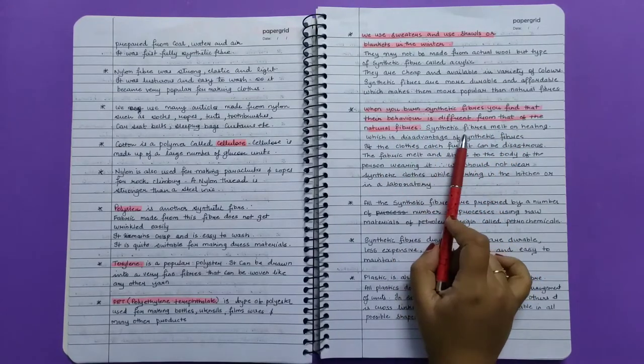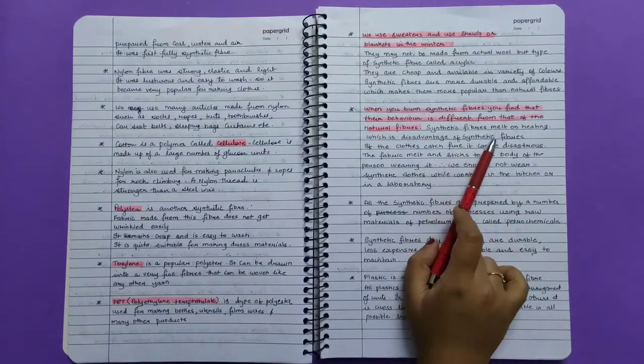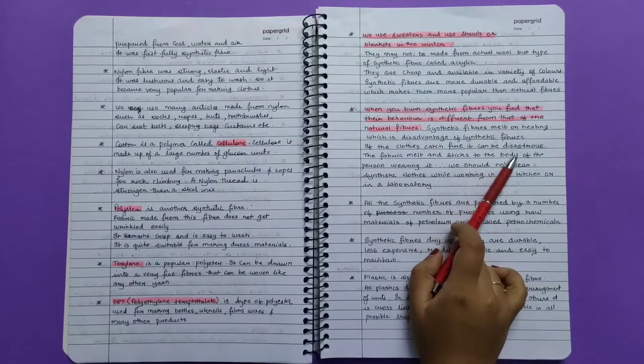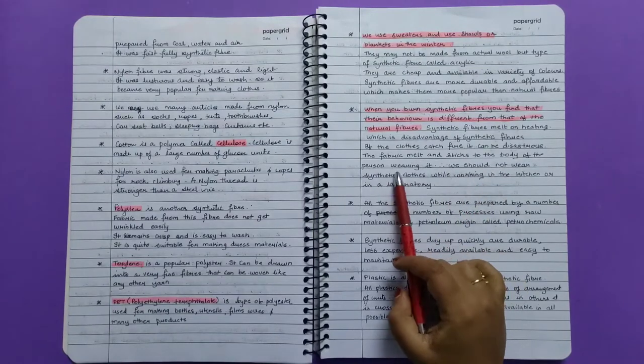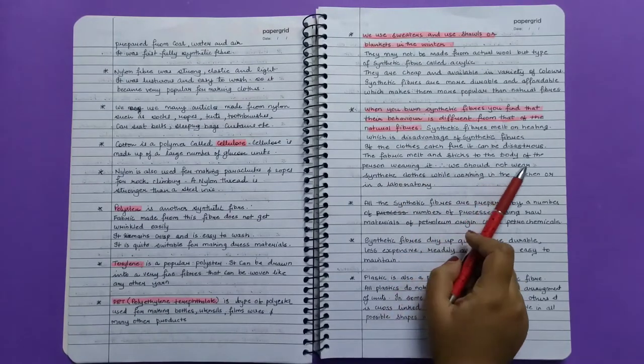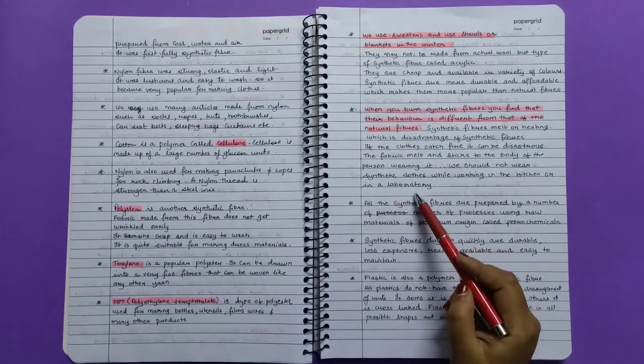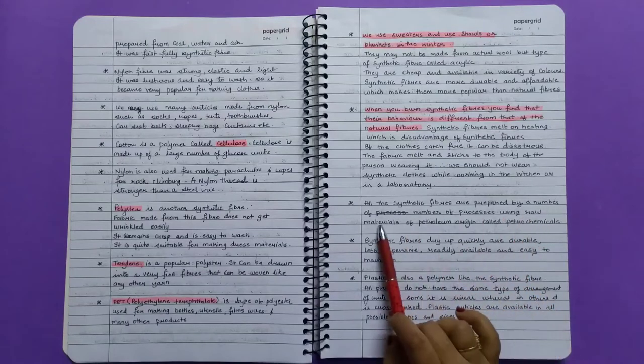Synthetic fibers melt on heating, which is a disadvantage. If the clothes catch fire, it can be disastrous. The fabric melts and sticks to the body of the person wearing it. Therefore, we should not wear synthetic clothes while working in the kitchen or in a laboratory.